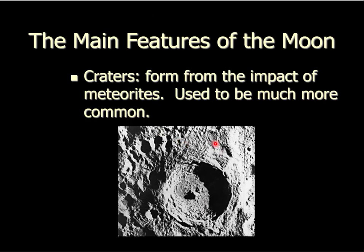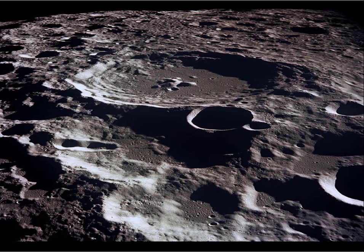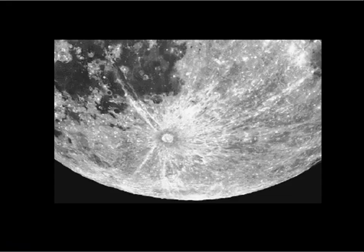The Moon is just covered with craters — impact craters. There are volcanic craters on the Moon, but I doubt you've ever seen one; they're very hard to find. Overwhelmingly, the craters you see on the Moon are impact craters, not volcanic.